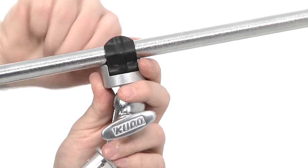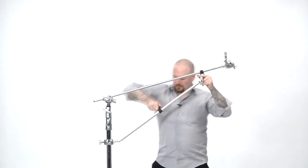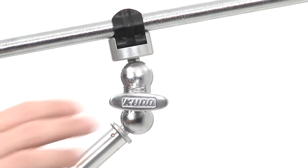Once both clamps are secure, adjust the position of your grip arm until it is at the desired angle. Then tighten the length adjustment and double ball joint knobs to secure everything in place.